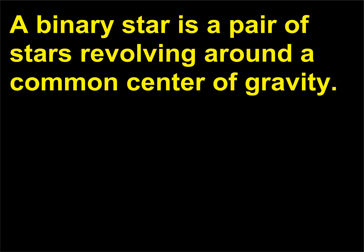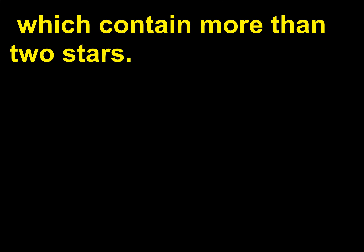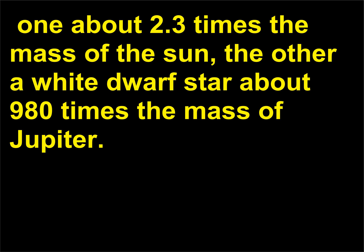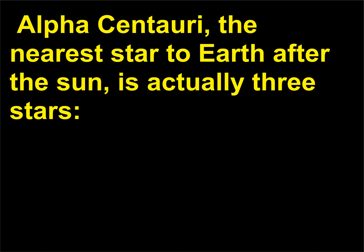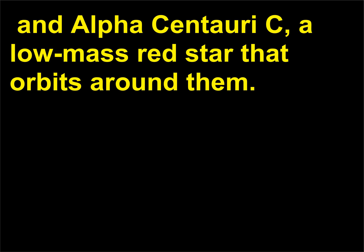A binary star is a pair of stars revolving around a common center of gravity. About half of all stars are members of either binary star systems or multiple star systems, which contain more than two stars. The bright star Sirius, about 8.6 light-years away, is composed of two stars: one about 2.3 times the mass of the Sun, the other a white dwarf star about 980 times the mass of Jupiter. Alpha Centauri, the nearest star to Earth after the Sun, is actually three stars: Alpha Centauri A and Alpha Centauri B, two Sun-like stars that orbit each other, and Alpha Centauri C, a low-mass red star that orbits around them.